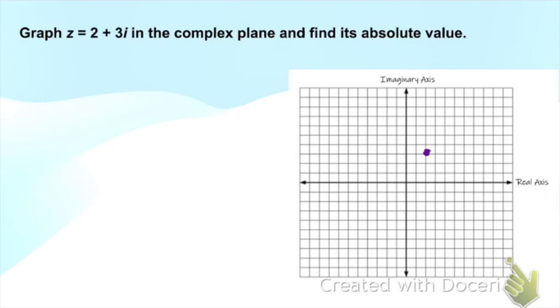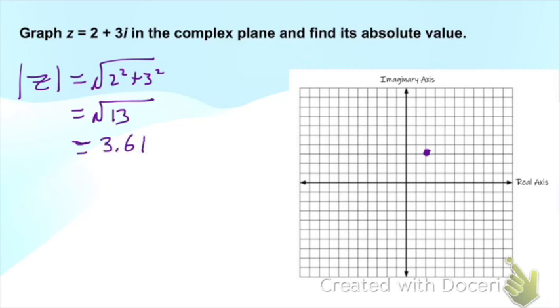We want to find the absolute value of z, which is our complex number. So we have the square root of 2² + 3², which is the square root of 4 + 9, which is 13. We're looking at the distance, so this is going to be a positive number. We generally round to the nearest hundredth. So 3.61 is what we get—the distance that point is from the origin.